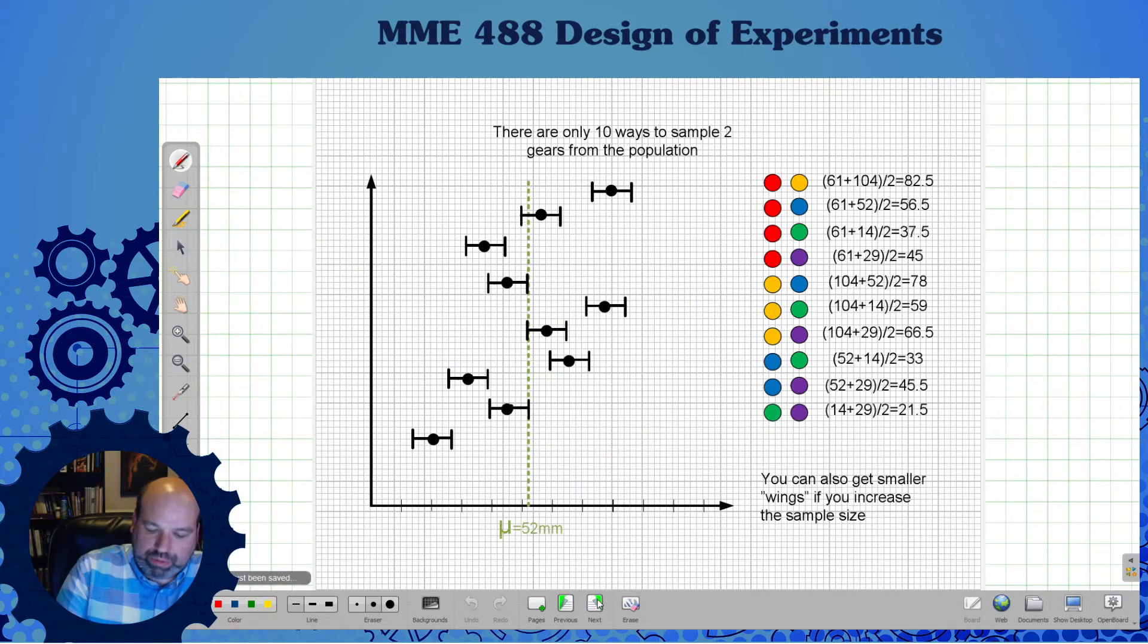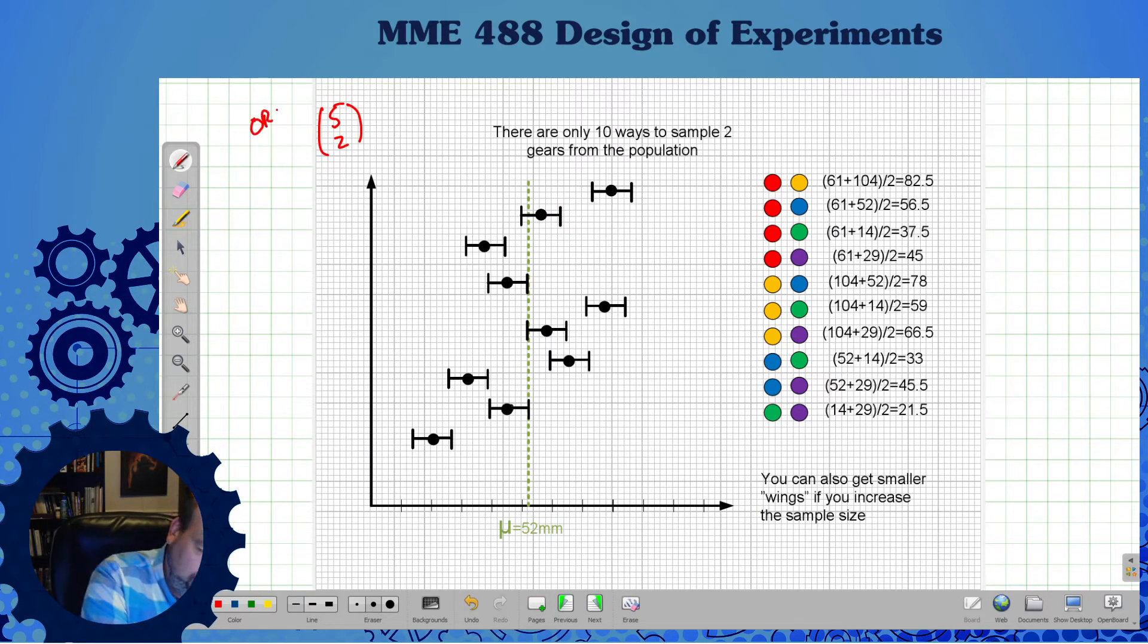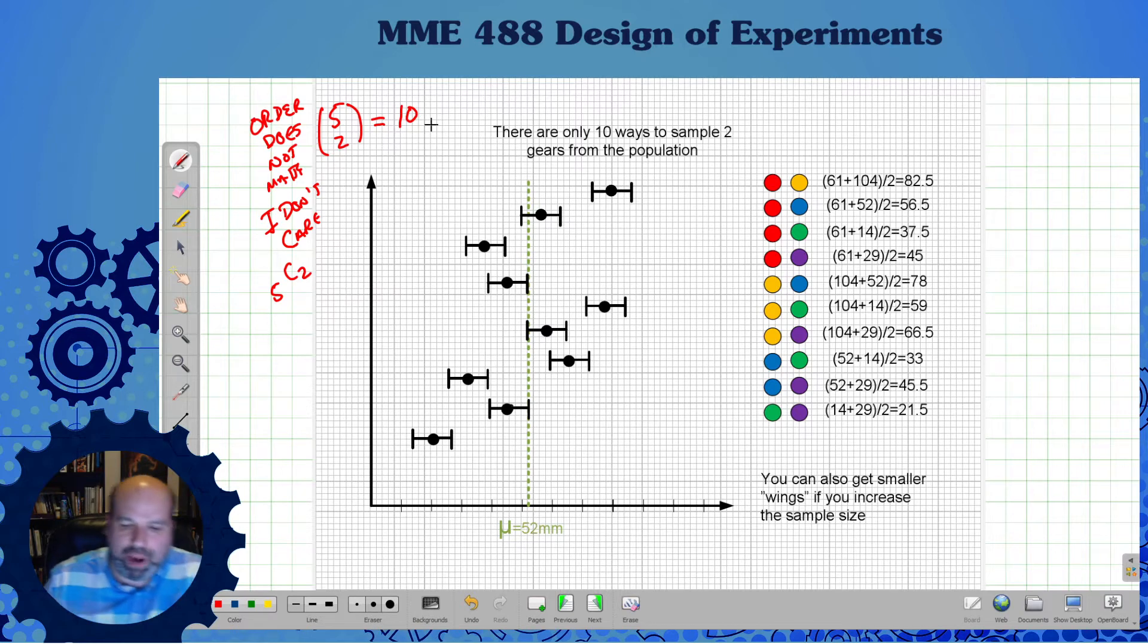That's only if I had a small n of one. What if I did two? I'm going to go back to my rule. I've got five choose two. Order does not matter. Five choose two is the binomial, and that is 10. So there's 10 possible ways I could take two gears out of that population without replacement. I can get the red one and the orange one, the red one and the blue one, red one and the green one, and so on and so forth. The order doesn't matter.